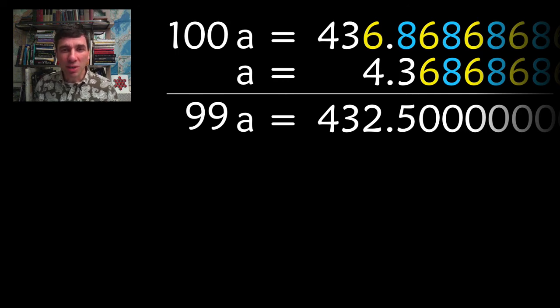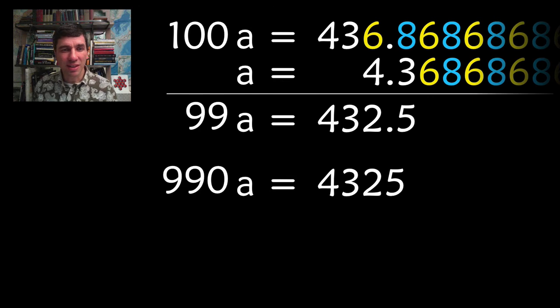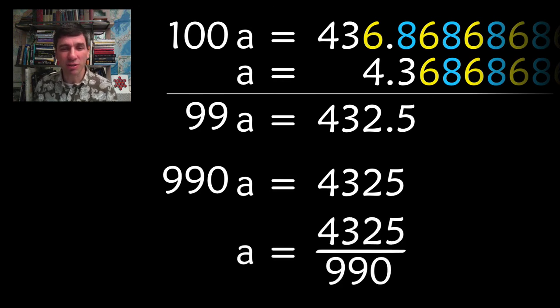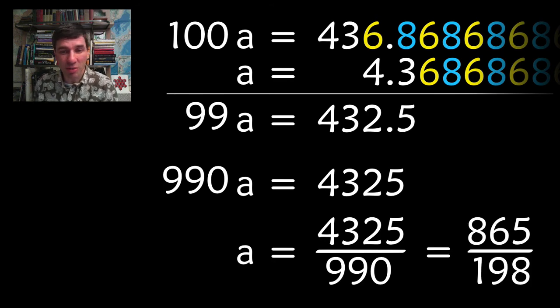Now all we have to do is to multiply by 10, and we're going to get rid of that. So now we have integers on both sides. So a is equal to 4325 divided by 990, which is good enough. I can simplify if I want. And the simplified form is 865 divided by 198.